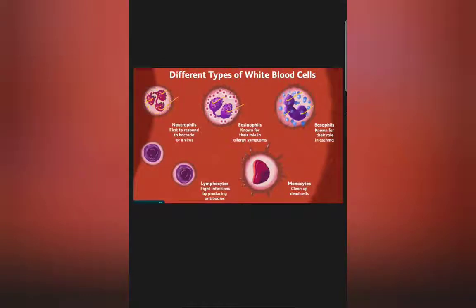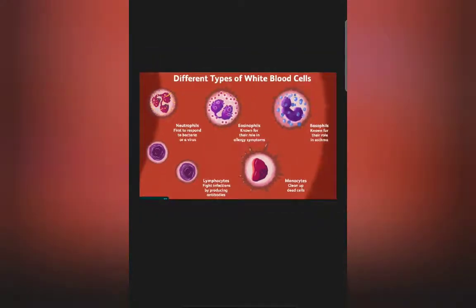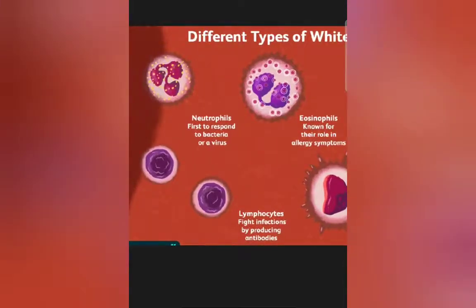The granules are visible in all granulocytes. On the basis of the nature of the granules, granulocytes are subdivided into three types: neutrophils, eosinophils, and basophils. Neutrophils contain abundant fine granules — the granules appear as very fine dots. Their nucleus consists of two to seven lobes; in this picture you can see three lobes.